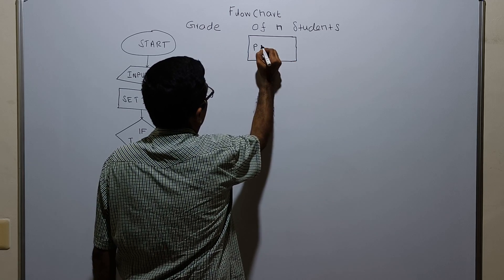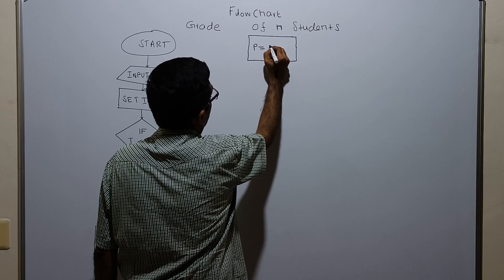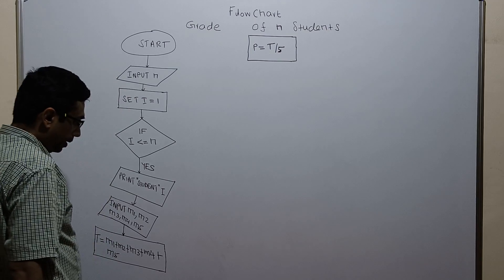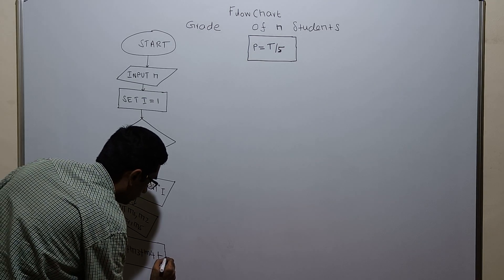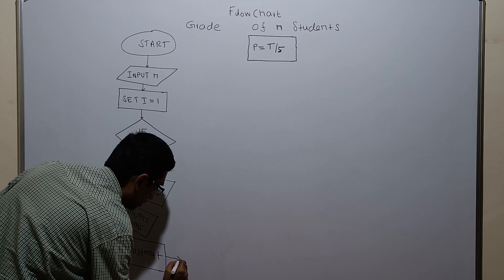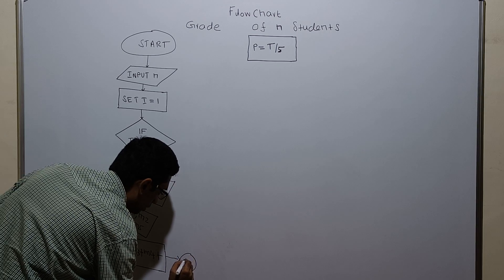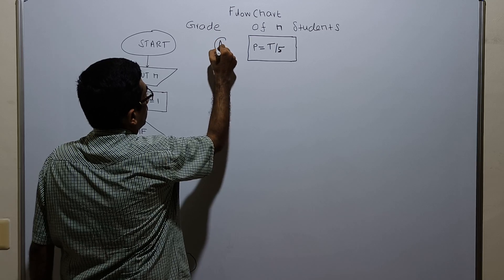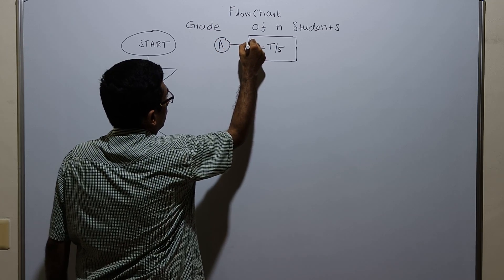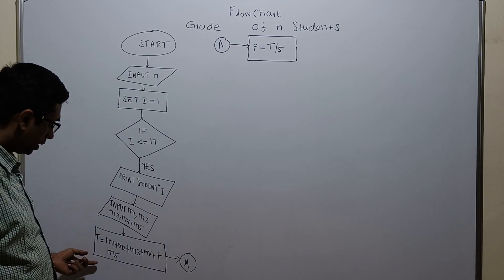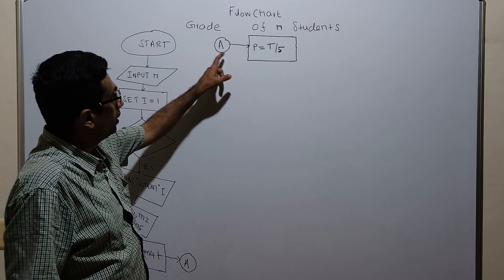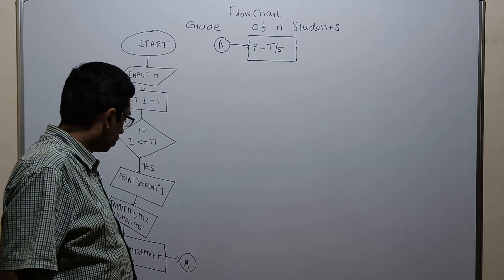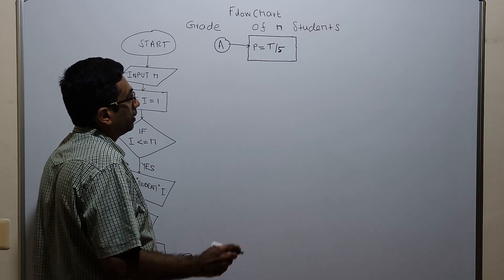The percentage equals total divided by 5. I am using a same-page connector circle. After the total step, the connector point A leads to percentage equals total divided by 5, so after calculating the total the percentage will get calculated.